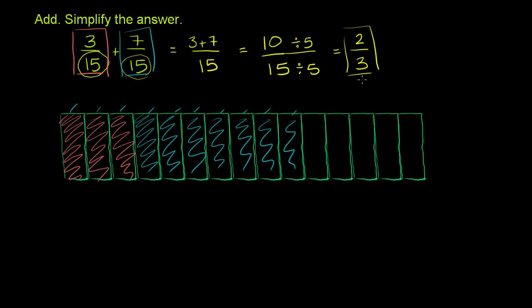And then to see why this is the same thing as 2/3, you can just split this candy bar into thirds. So each third would have five sections in it. So let's do that.